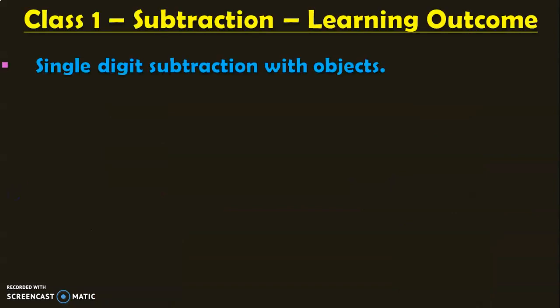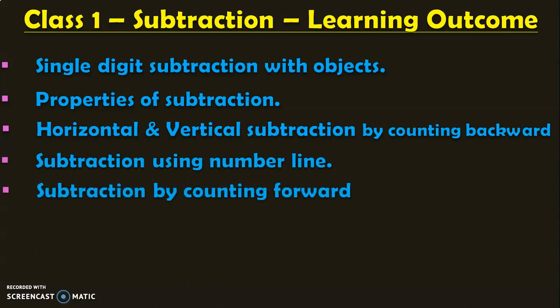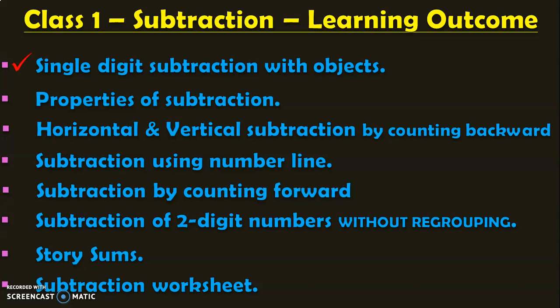Dear viewers, let us see the learning outcomes for subtraction in class 1: single digit subtraction with objects, properties of subtraction, horizontal and vertical subtraction by counting backward, subtraction using a number line, subtraction by counting forward, subtraction of two digit numbers without regrouping, story sums, and subtraction worksheets. I have already covered single digit subtraction with objects and properties of subtraction in separate videos. In this video, we saw horizontal and vertical subtraction by counting backwards. In the upcoming videos, we will cover the remaining topics, each in a separate video.